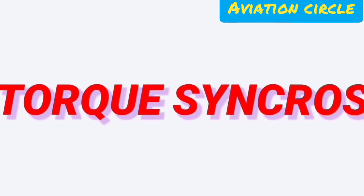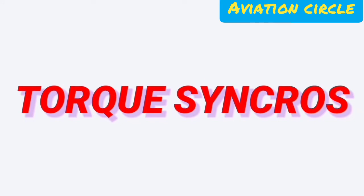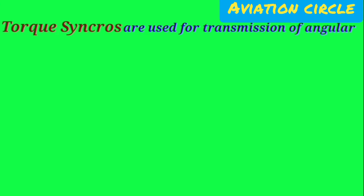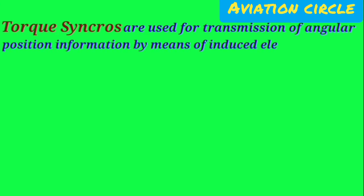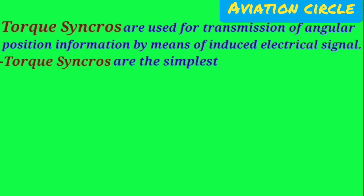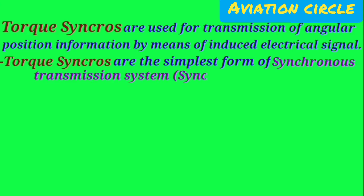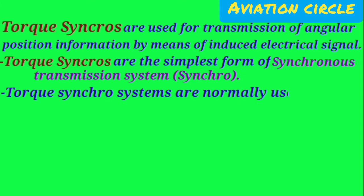Hello everyone. In this video we will discuss about torque synchro. Torque synchros are used for transmission of angular position information by means of induced electrical signal. Torque synchros are the simplest form of synchronous transmission system, also known as synchro. Torque synchro systems are normally used when mechanical load is low.